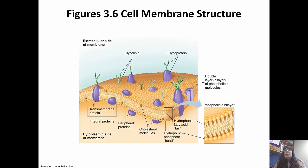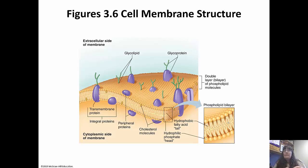The green structures coming off the proteins are glycoproteins and glycolipids. Glyco means sugar or carbohydrate, so a glycoprotein is a carbohydrate chain attached to a protein, and a glycolipid is a carbohydrate chain attached to a lipid. The glycolipids come directly off the phospholipids of the plasma membrane, and glycoproteins come off those interspersed proteins. They function in cell recognition and are very important.